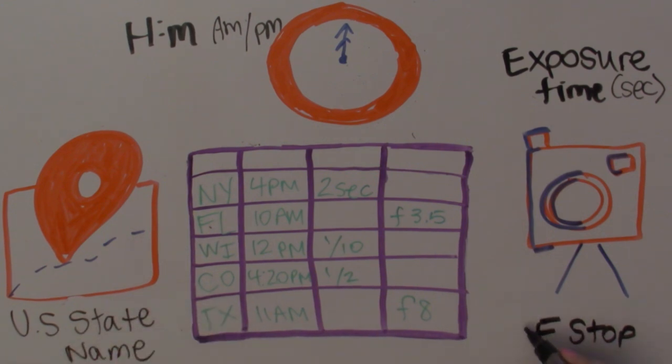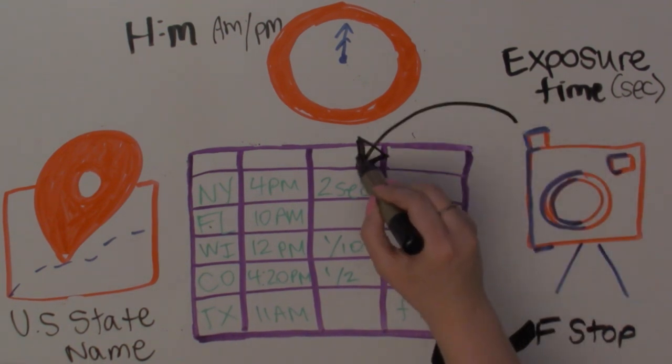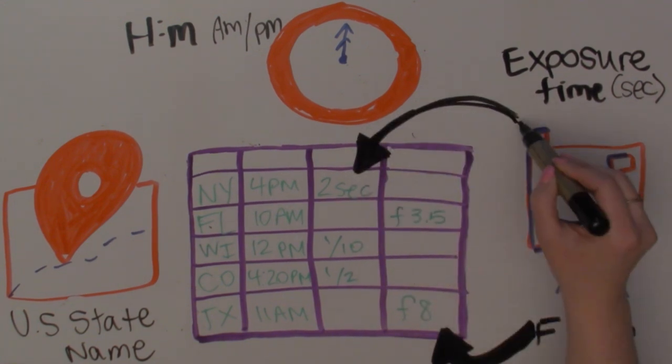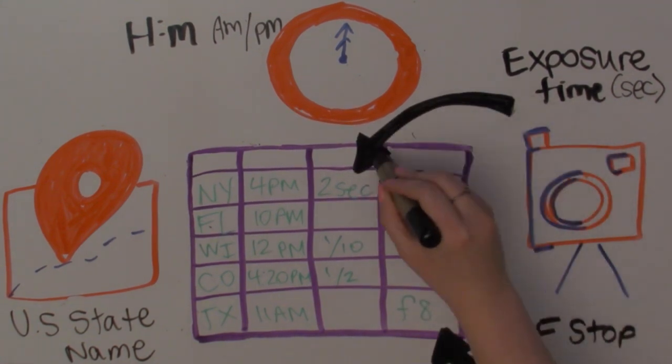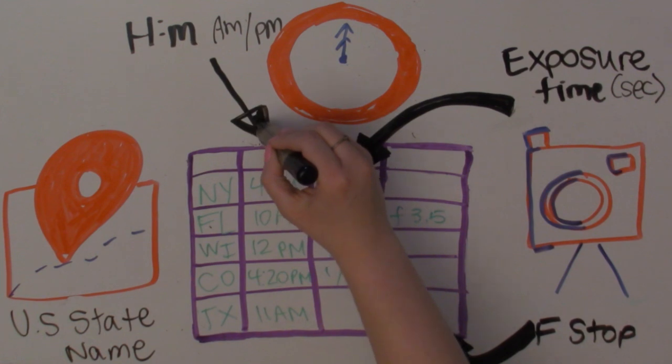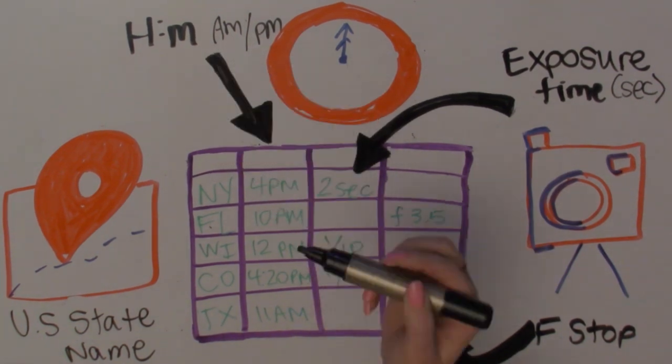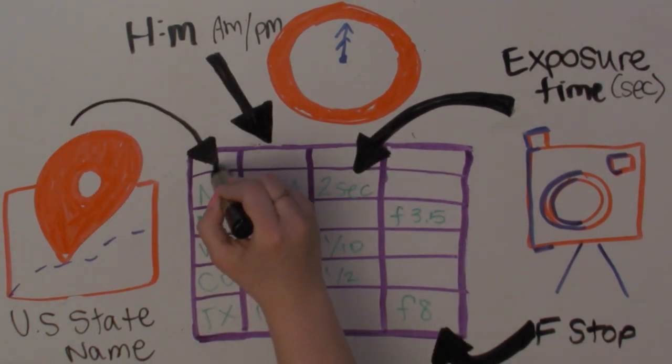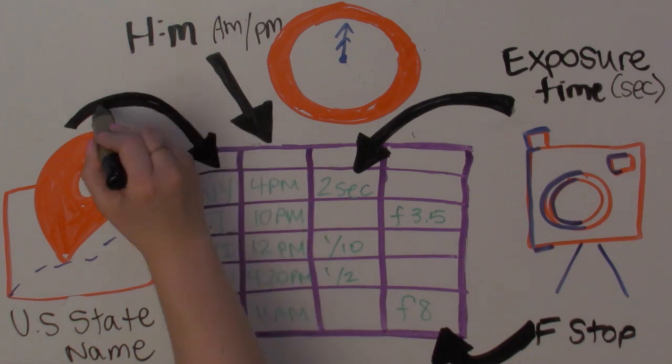To make sure someone who sees this data can understand it, they need to know what it means, including the idea it's recording, such as the exposure time, and what its values being recorded in, such as the number of seconds, the time it was recorded, in hours and minutes, and the location as a US state name.